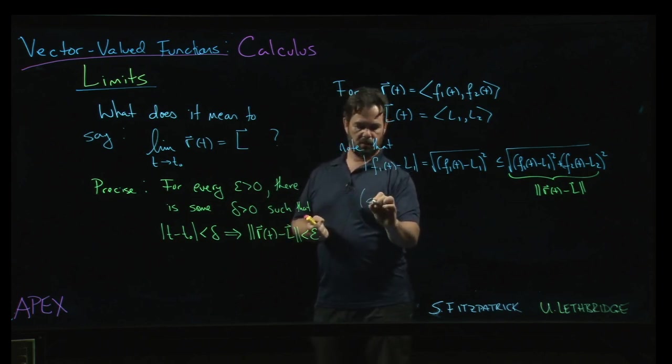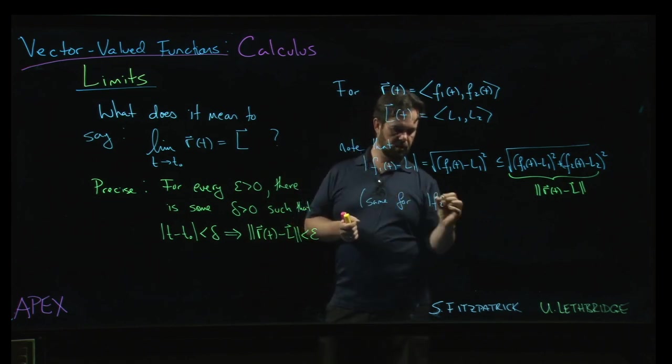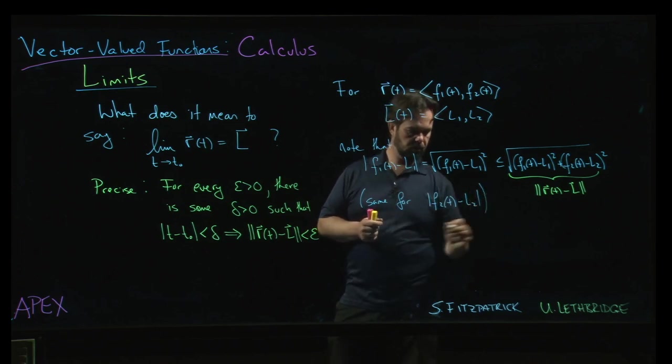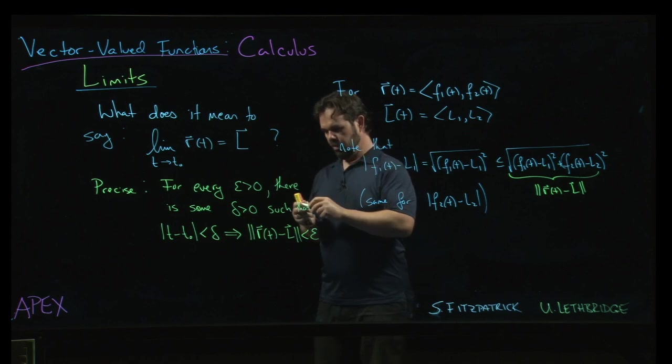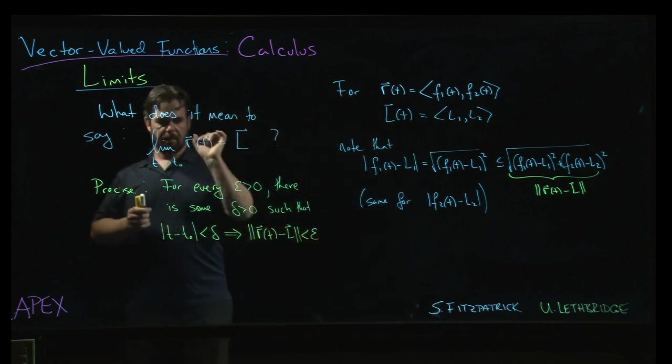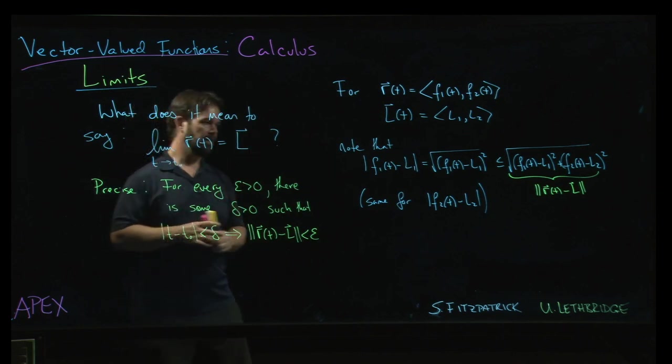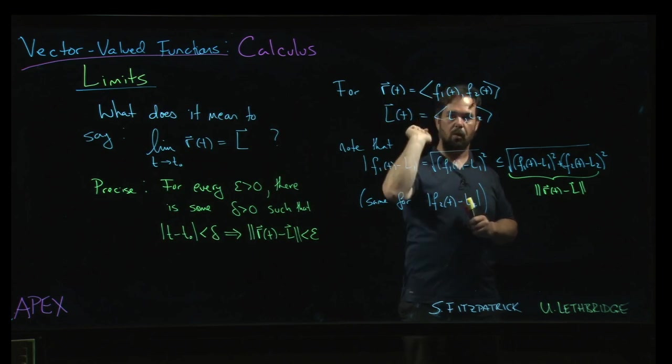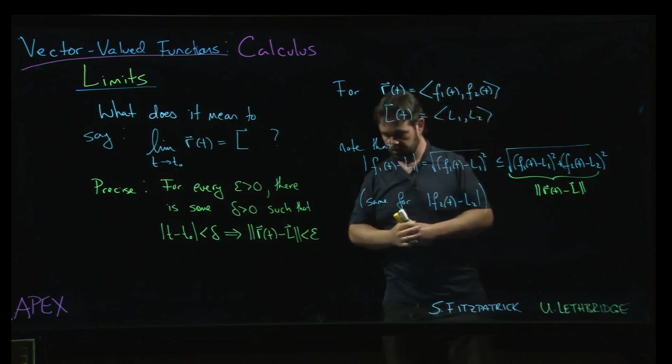And then, of course, the same would go for the magnitude of f2 minus L2. And so if the limit of this vector-valued function r(t) is the vector L, well, then it has to also follow that the limit of f1 has to equal L1 and the limit of f2 has to equal L2.